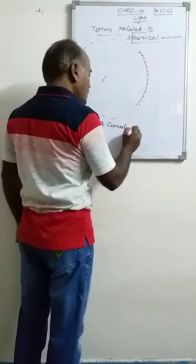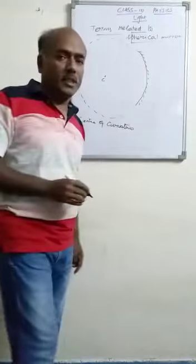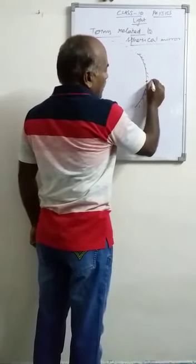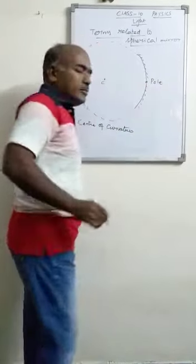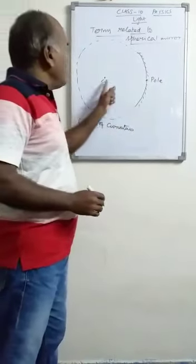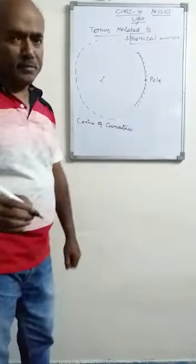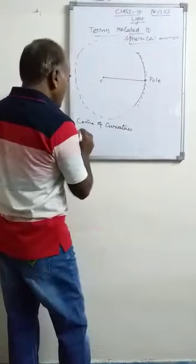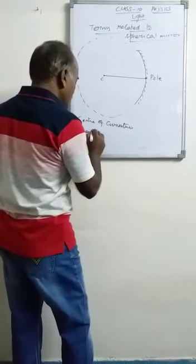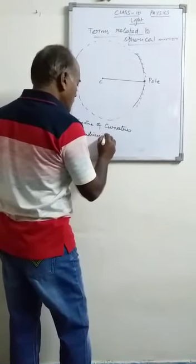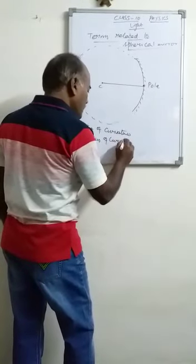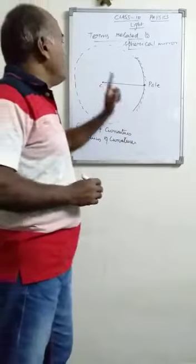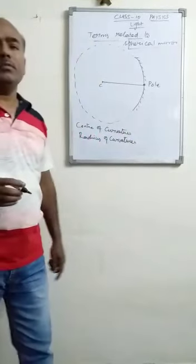Then, the center point on the surface of mirror — that is the pole. Then, the line segment joining the center of curvature and the pole is known as radius of curvature. Radius of curvature is a very important term — it is a measurable term which we have to use for the spherical mirror.